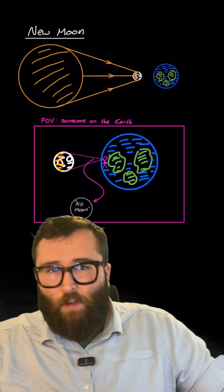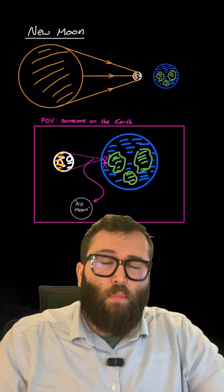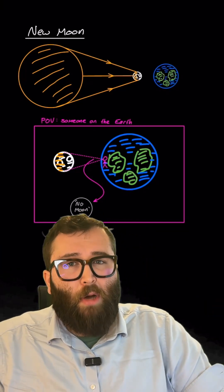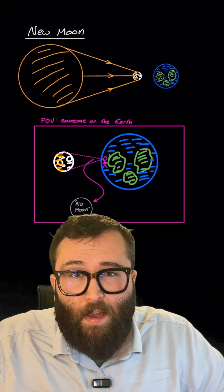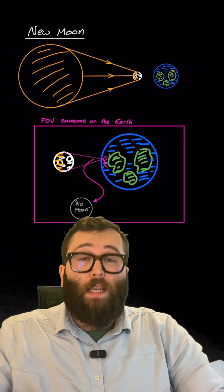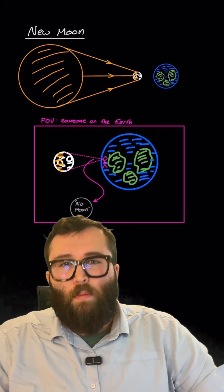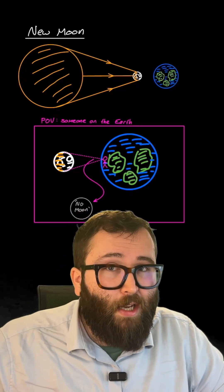Let's start by looking at the configuration of the sun, earth, and moon when we have a new moon. Now a new moon is where you can't really even see the moon in the sky. However, this isn't because the moon isn't being lit up—it's just that the side of the moon we're looking at doesn't have any light hitting it from the sun.